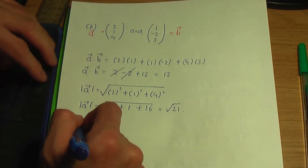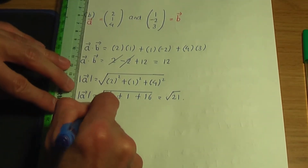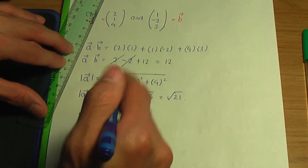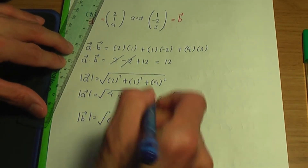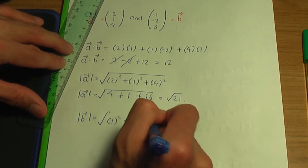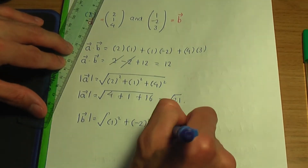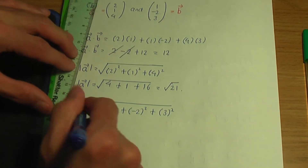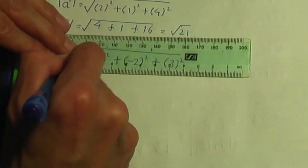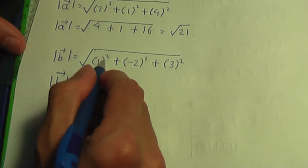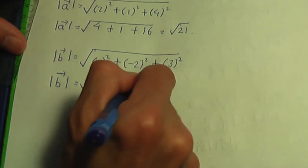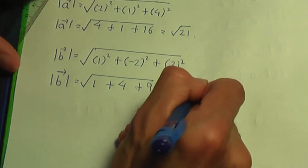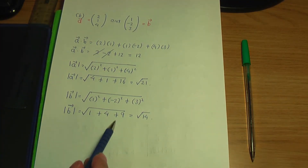Now the modulus of B — same calculation. It's the square root of one squared plus minus two squared plus three squared, which is the square root of one plus four plus nine. That gives root fourteen. So root fourteen is the modulus or magnitude of vector B.